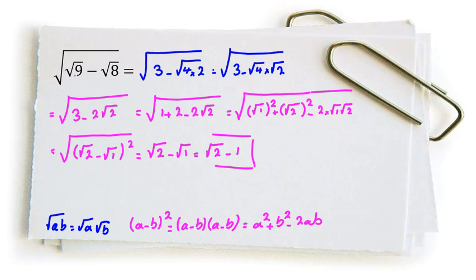And if we raise it to the power of 2, it's 2 plus 1 minus 2 root 2, equals 3 minus 2 root 2, which is square root of 9 minus square root of 8.